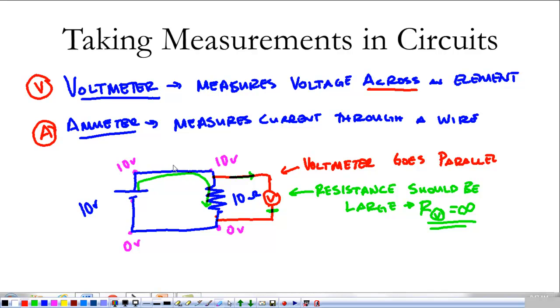An ammeter, we want to measure the current through something. So for an ammeter, we're going to have to break apart our circuit and stick the ammeter right in the middle. We want the ammeter to be in the way of our current, because we want that current to run straight through the ammeter. So an ammeter goes in series.